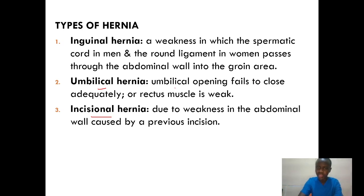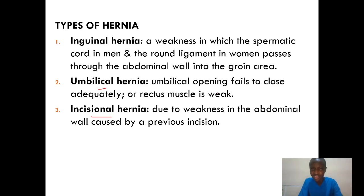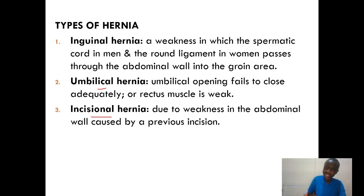Umbilical hernia occurs when the umbilical opening fails to close adequately or the rectus muscle is weak. When the rectus muscle is weak or the umbilical opening fails to close adequately, we are at risk of developing umbilical hernia. Inguinal hernia is always a weakness in the spermatic cord, mainly in men, and around the ligament in women, which passes through the abdominal wall into the groin area.